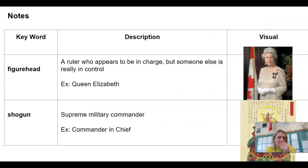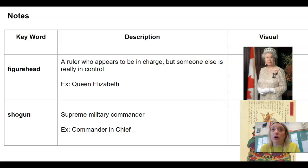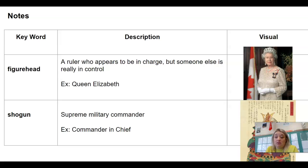We only have two keywords today. Our first keyword is a figurehead, which is a little bit tricky to understand. A figurehead is a ruler who appears to be in charge, but someone else is really in control. It's similar to a regent — someone who ruled for another person because they couldn't, typically due to age — but a figurehead is different in that the ruler appears to be in charge but isn't. We're going to see this in Japan.